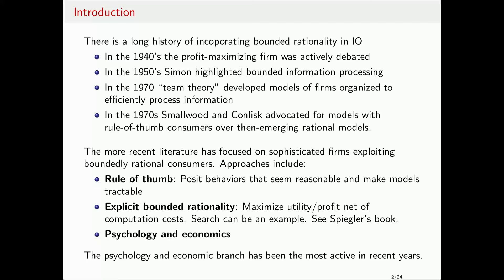There was also a lot of literature about team theory — Simon argued that firms have to process information, just like firms have to manufacture goods. Firms have bounded information processing capabilities and organize themselves accordingly. There are costs of trying to set the right price, just like there are costs of trying to produce goods, and we should take those costs into account.